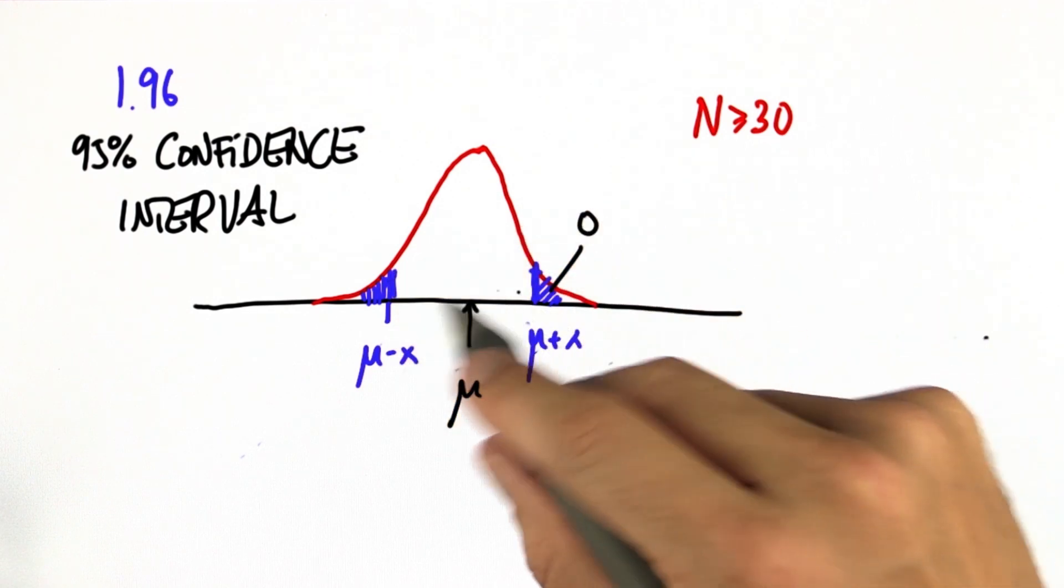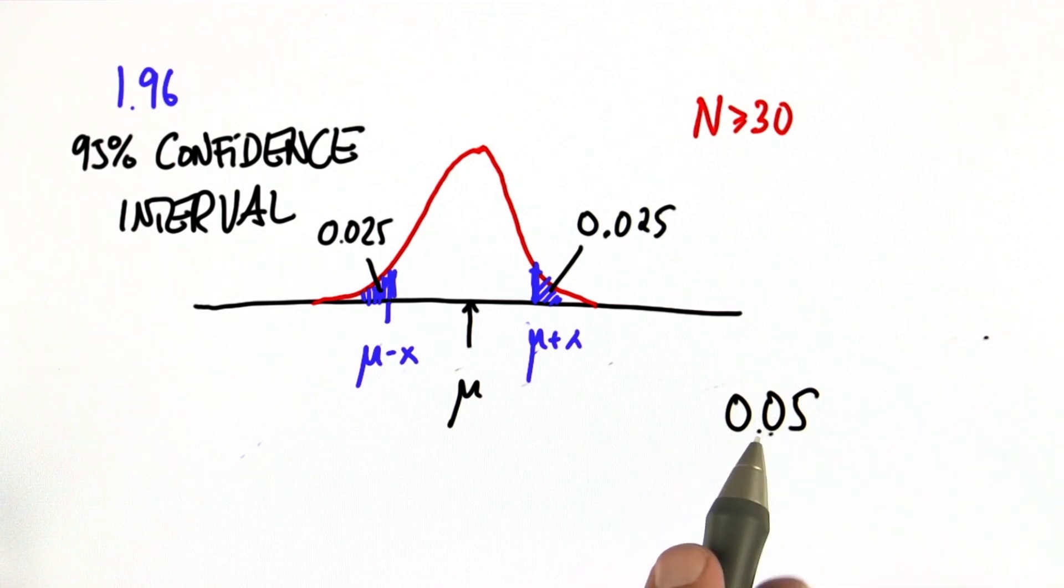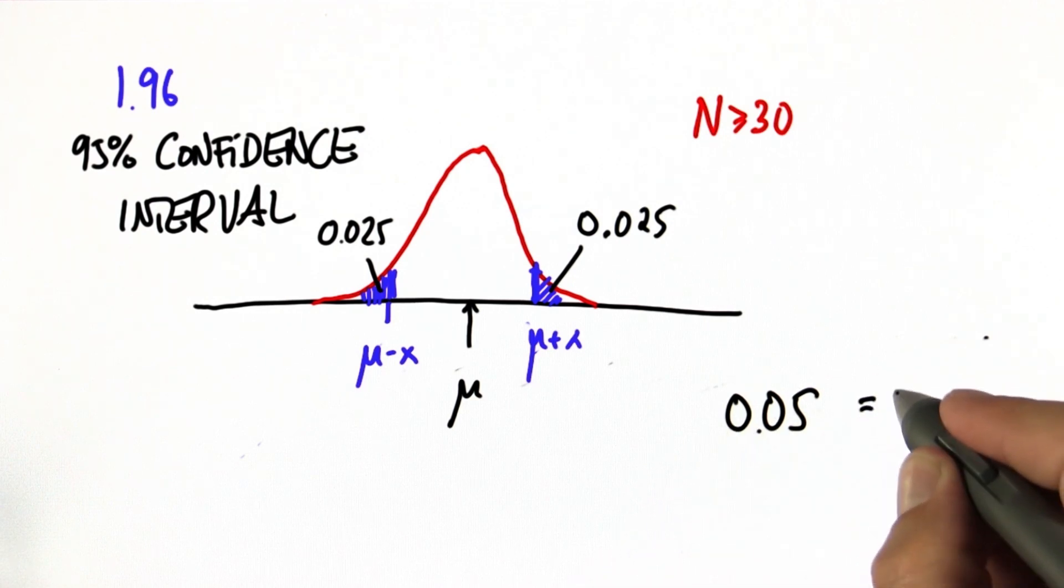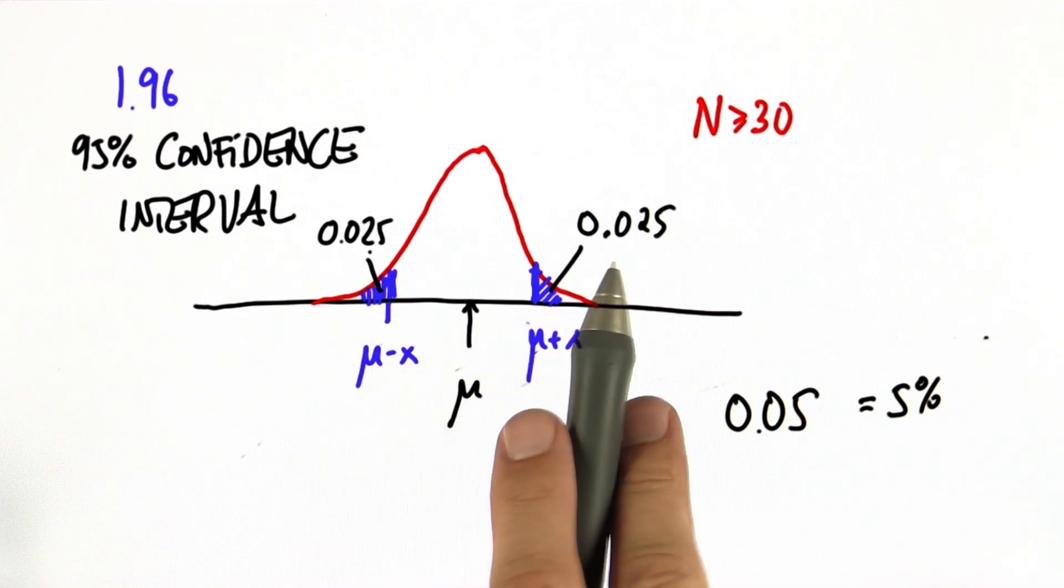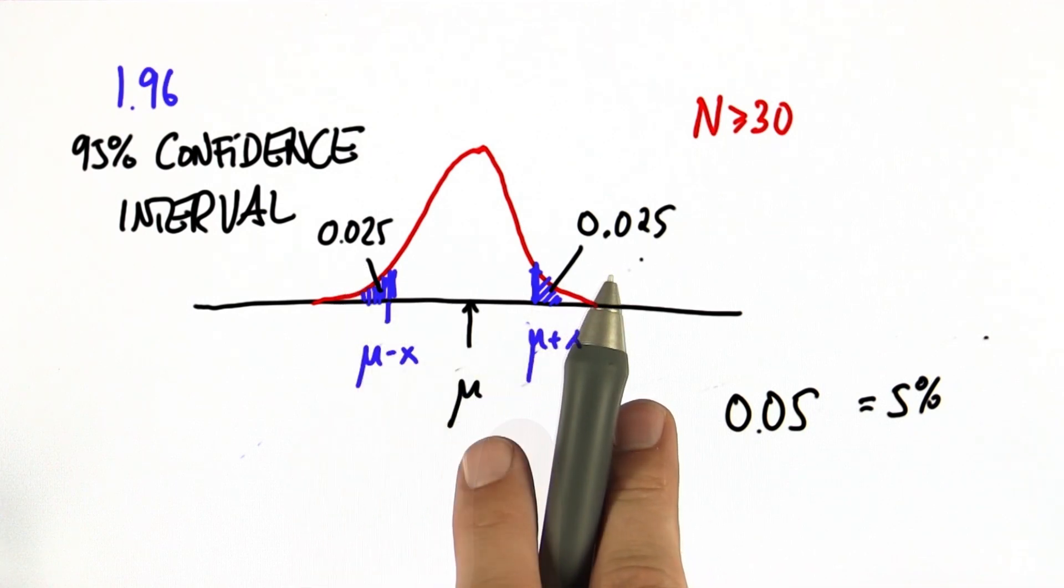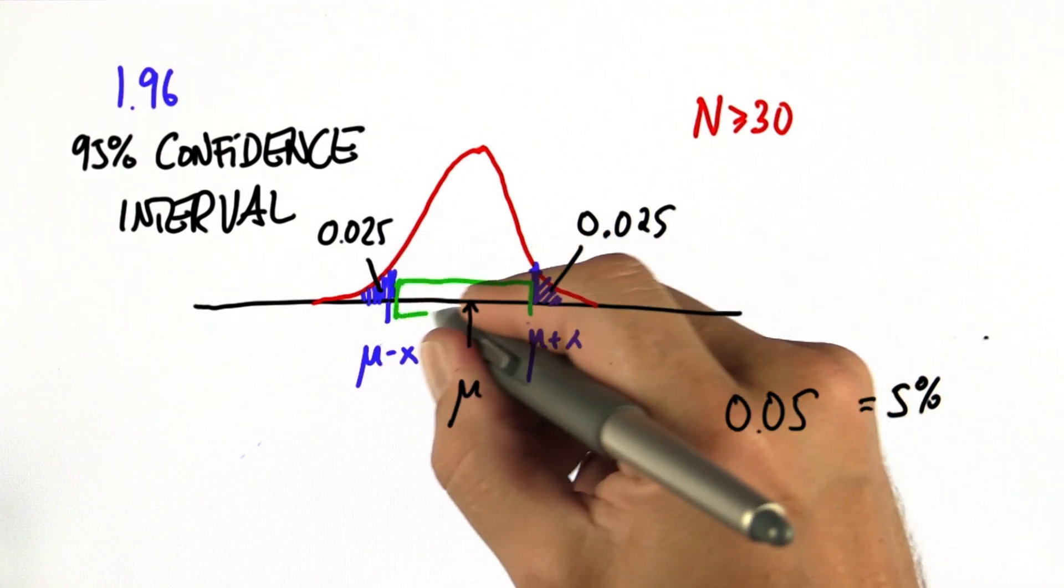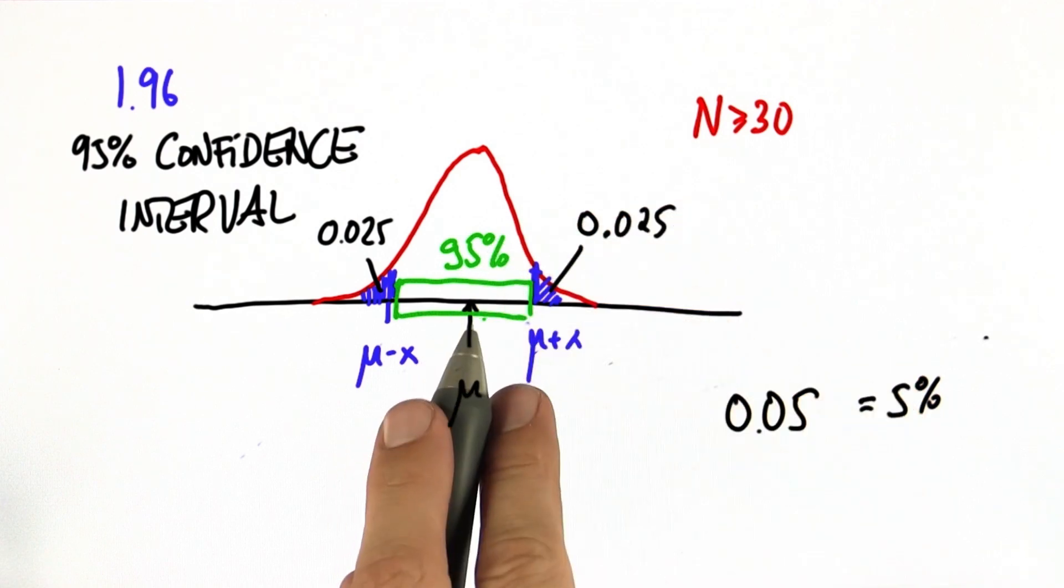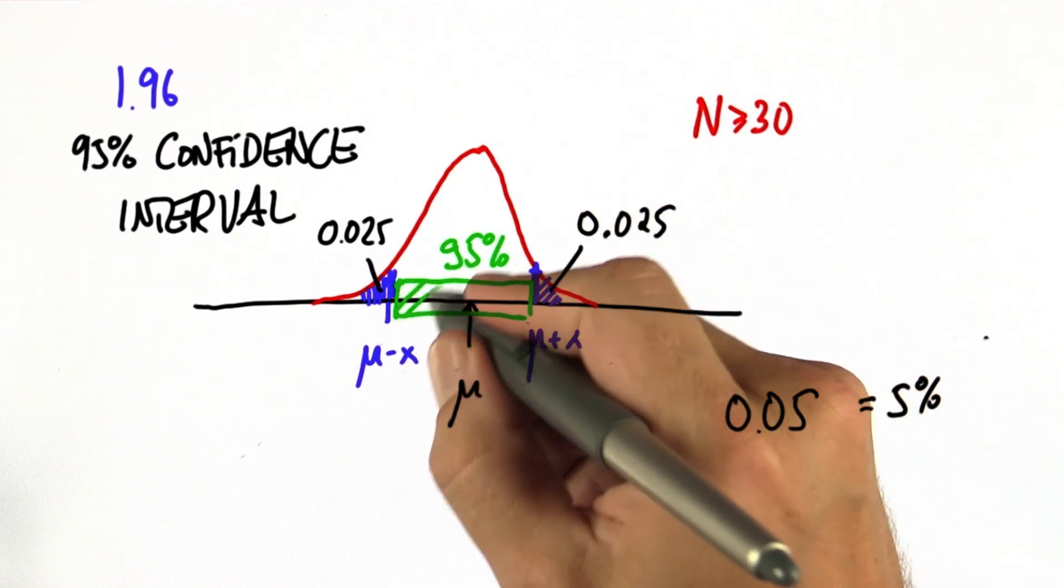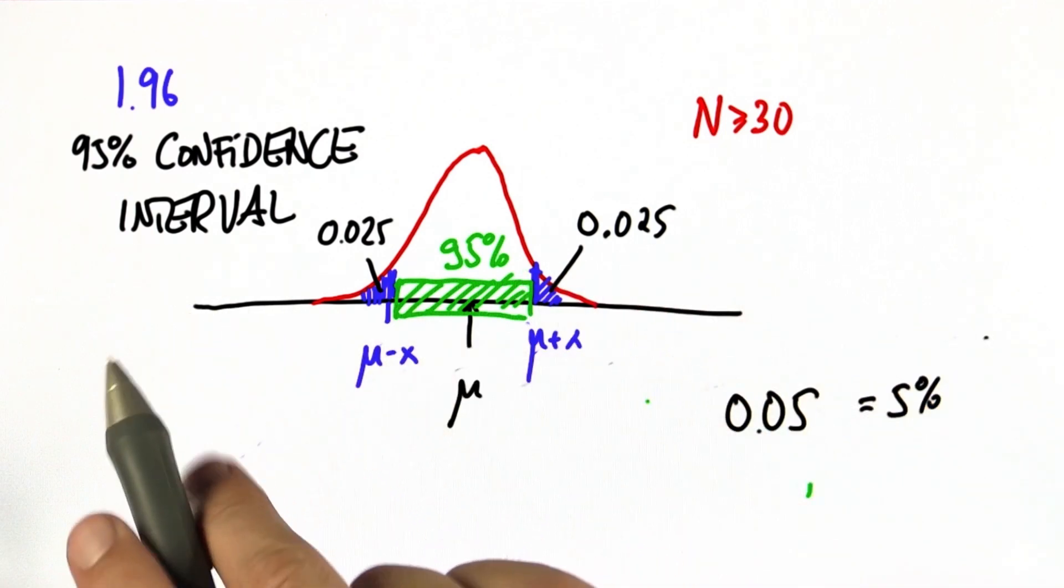such that the total area in these two tails over here is exactly 0.05. That's the same as 5%. In fact, we place half of this on the left side and half of it on the right side. When that's the case, the confidence interval itself carries 95% of all possible values for p. So the chances that p lies outside the green confidence interval is 5%. Hence, we call it a 95% confidence interval.